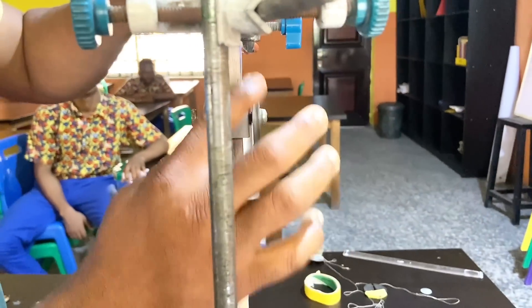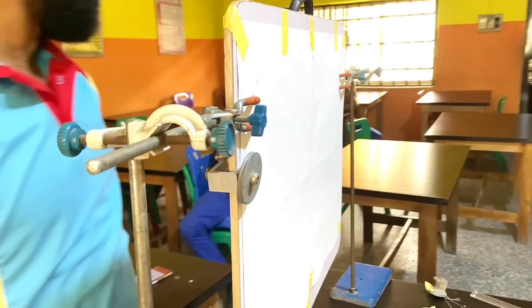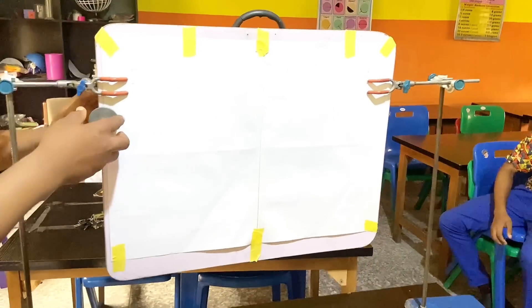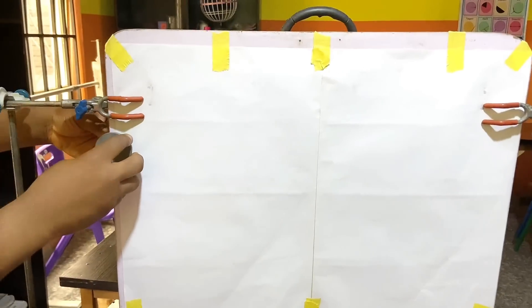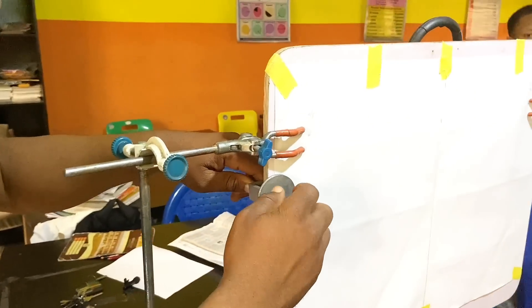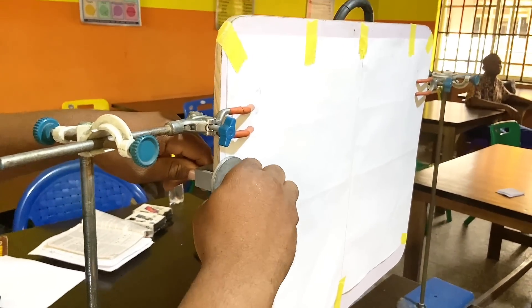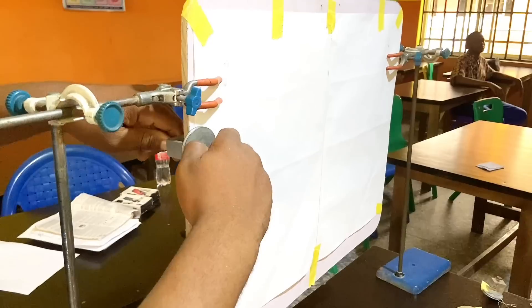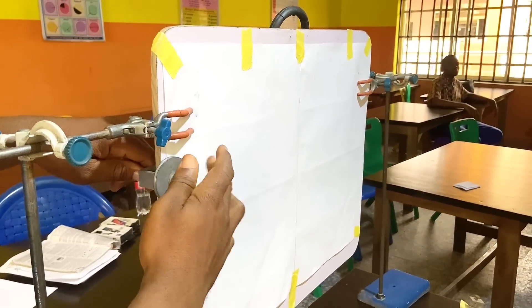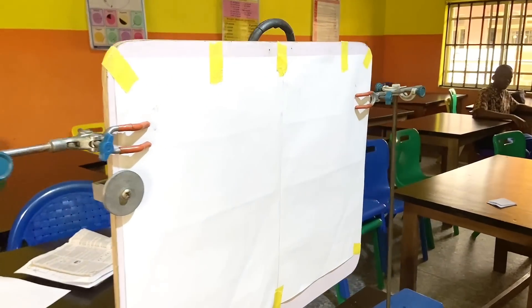Then I have to ensure that it's free to move. Good. So the next is, I have to adjust it to ensure that it's very straight. Depending on the kind of pulley you are using, I need to make sure it's free to move.